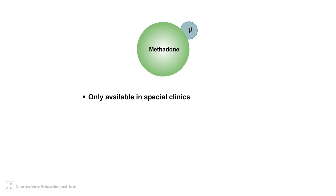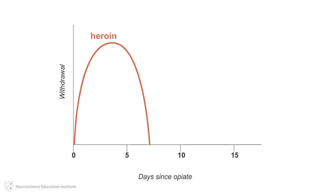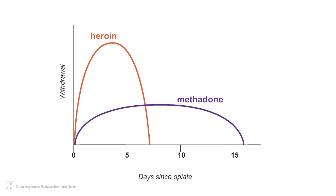Methadone is only available through specialty clinics where the patient must make daily visits for administration. This may lead to some restrictions to access as well as associated stigma. Also linked with methadone is an increased risk for respiratory depression and overdose. It is available orally in both a liquid and tablet formulation. The withdrawal resulting from discontinuation of methadone is less than that for heroin; however, the withdrawal symptoms may still be somewhat severe and may last longer than those associated with heroin discontinuation.